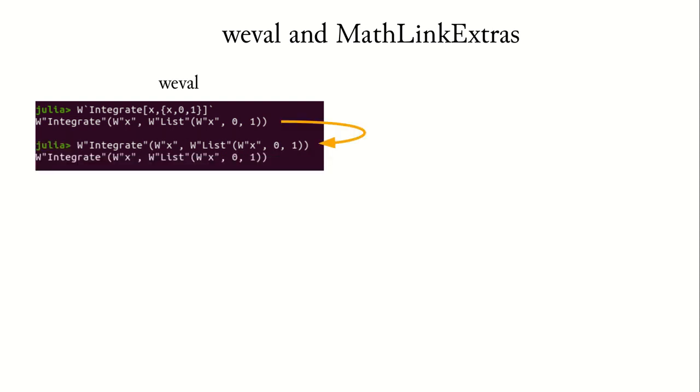So first MathLink just creates the object, and the W integrate x list object can then be put back into Julia as a self-reproducing expression. This is a nice way to learn MathLink syntax. You can take a Mathematica expression and you can convert it to the corresponding MathLink object.